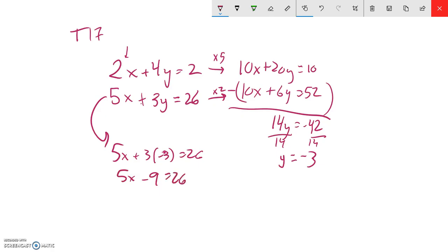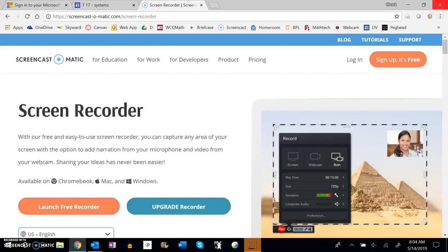I'm going to add 9 to both sides in order to get that 5x all alone. 5x equals 35, so x must equal 7. So my solution is 7, negative 3. That's the xy pair that makes both these equations true.